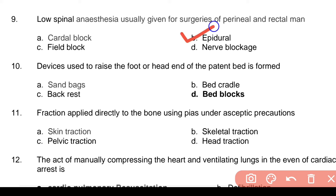Question 9: Low spinal anesthesia usually given for surgeries of perineal and rectal region — Answer: b. Epidural. Question 10: Device used to raise the foot or head end of the patient's bed — Answer: d. Bed blocks.